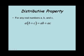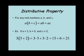Now let's look at the distributive property. This property says for any real numbers a, b, and c, a times (b plus c) equals a times b plus a times c. This is a property we use a lot. In our example, a equals 3, b equals 5, and c equals 2. So 3 times (5 plus 2) equals 3 times 5 plus 3 times 2. In the first case, 3 times 7 equals 21. In the second case, 15 plus 6 also equals 21. This works for any real numbers a, b, and c.